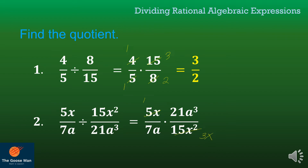Next, 21aq and 7a are divisible by 7a, so we have 1 here, and 21aq divided by 7a is 3q. But take note: 3 and 3 are still divisible by 3. So what we have now is 1 times q all over 1 times x, which is equal to q all over x.